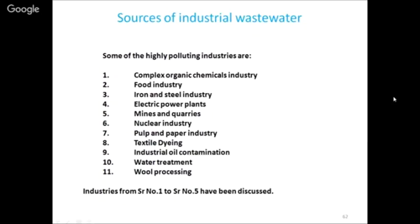Having reviewed all the conventional methods, we made the person aware of harmful content, characterized it, and now need to apply appropriate technology. First we should know which industry we are dealing with. The areas of importance in our industrial complex include: complex organic chemical industries, food industry, iron and steel, power industry, mines, nuclear, paper, textile, oil contamination, and water treatment - the list is long. We have taken the first five as our main examples.